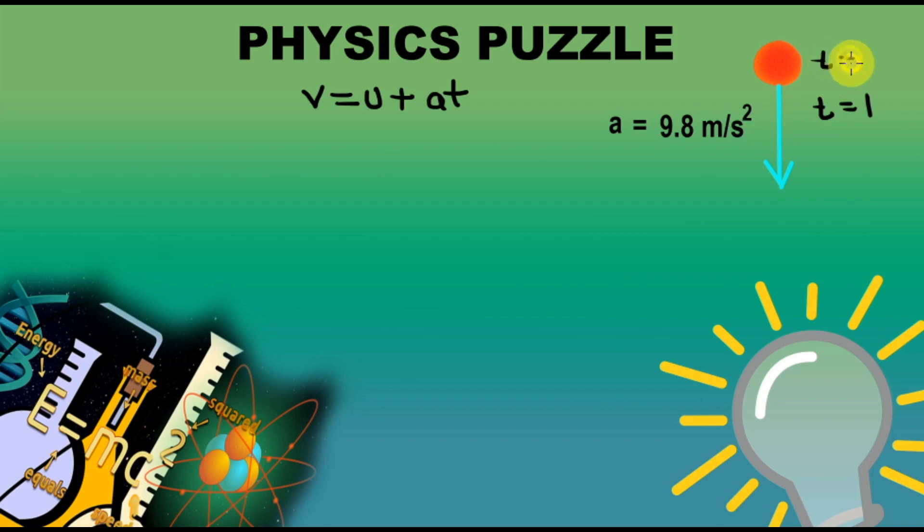When it is released, t is equal to 0. And we will analyze its motion for t equal to 1 second. Final velocity, v is equal to the initial velocity, which is 0, plus acceleration, which is 9.8, multiply by time, which is 1 second. v is equal to 9.8 meter per second.